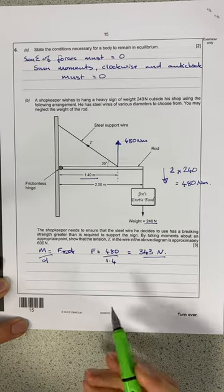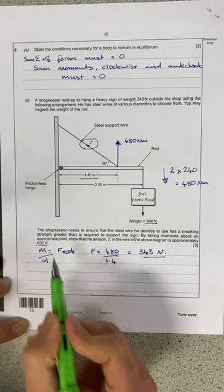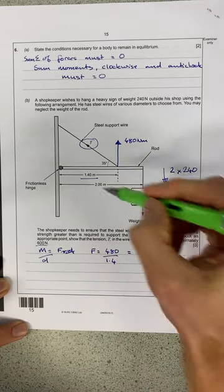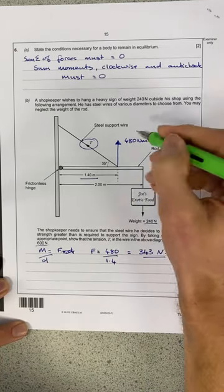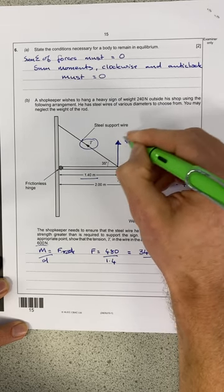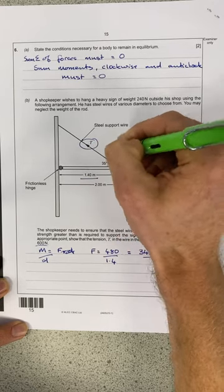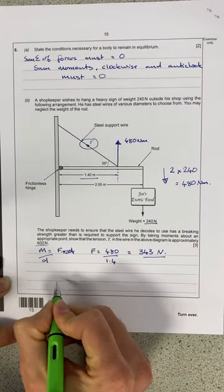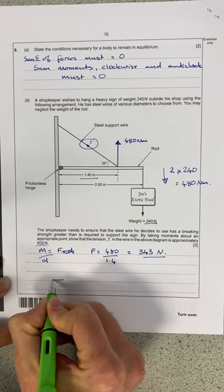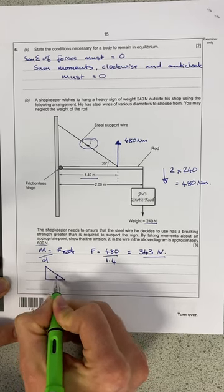I've not finished yet because what they want me to do is show that the tension in the wire is equal to approximately 600 newtons. So I need to draw myself a quick vector diagram here. Remember that's a moment, not a force. So actually, what we need to do is look at what is the force in this triangle. I'm just going to very quickly sketch out the triangle that I'm looking for here.